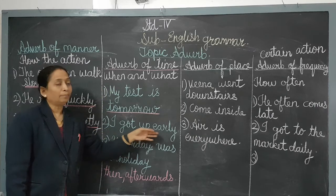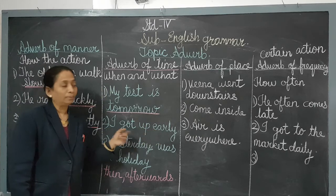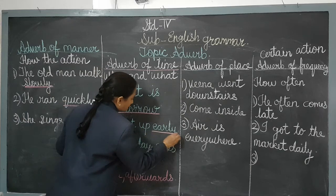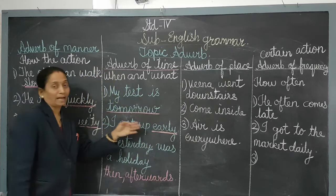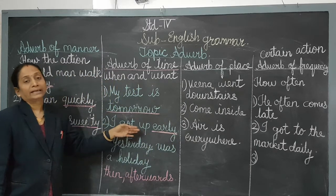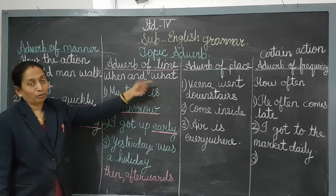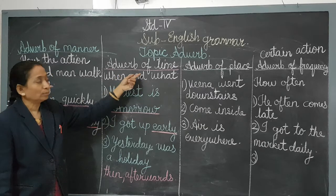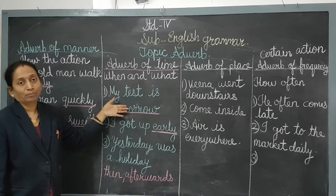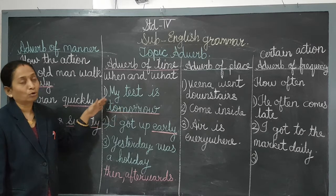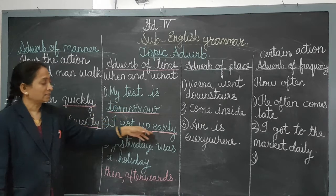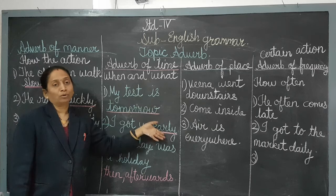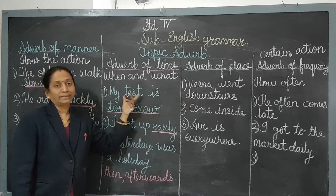Then: 'I got up earlier.' When did you get up? Earlier. This word 'earlier' also shows us the timing of getting up — when the action happened. So in this sentence, 'earlier' is the adverb of time; it shows us the time.